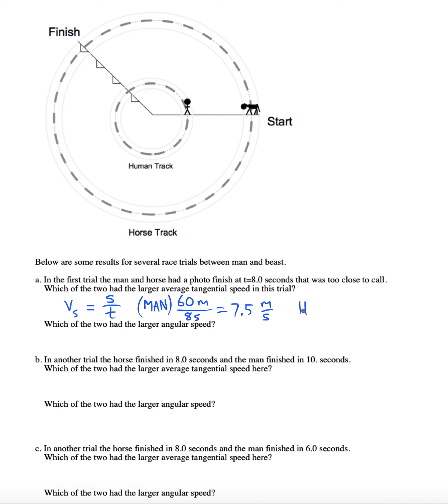And now let's do it for the horse as well. 180 meters in eight seconds - 22.5 meters per second. Clearly the horse ran faster if we're talking about tangential speed.